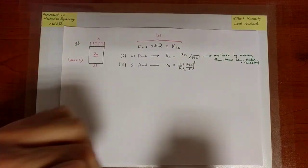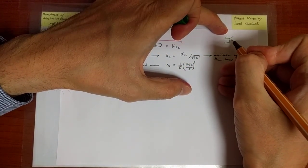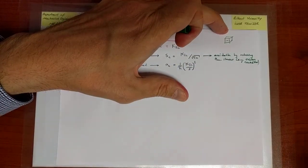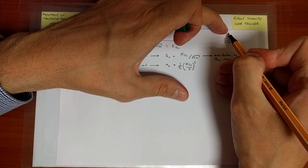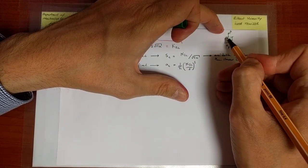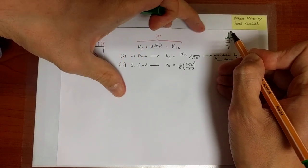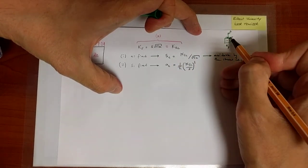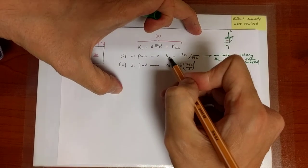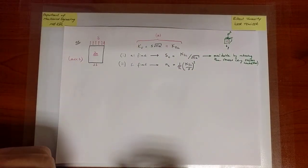To emphasize: if a structure has a crack and must carry a certain load, the load divided by the cross-section area gives the value of S. If that value exceeds SC, we can make the cross section thicker so the average stress drops below SC, ensuring the crack does not catastrophically propagate.